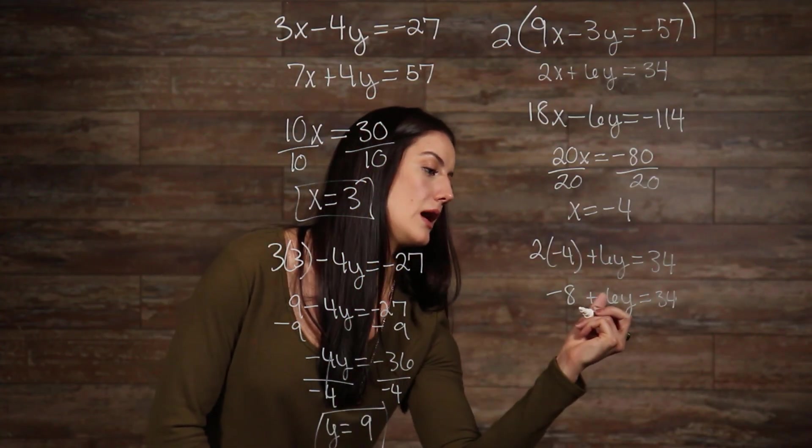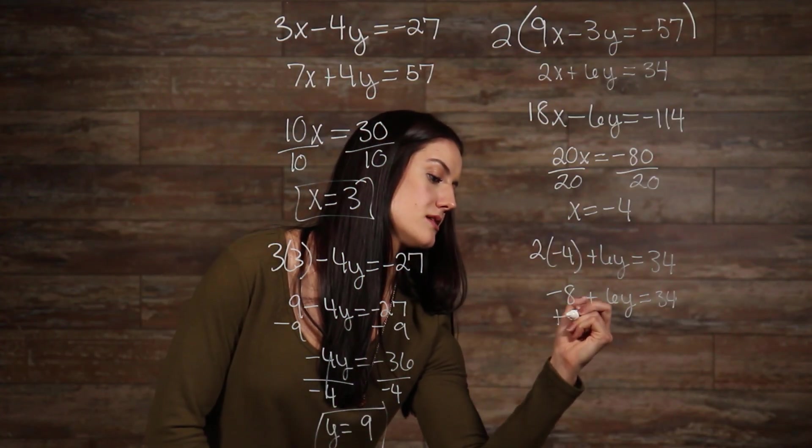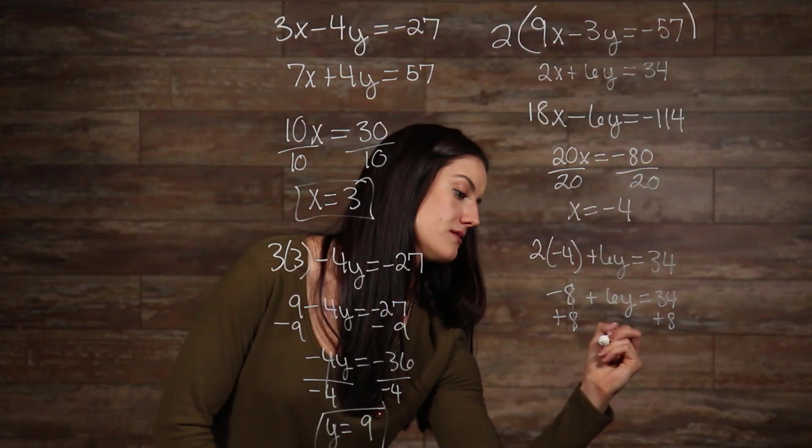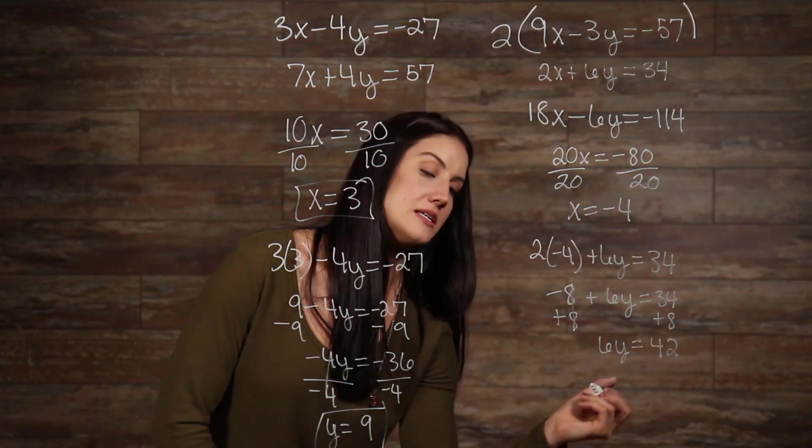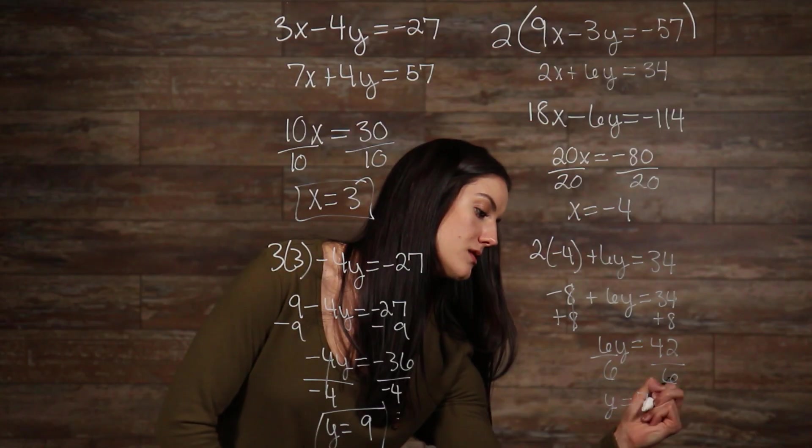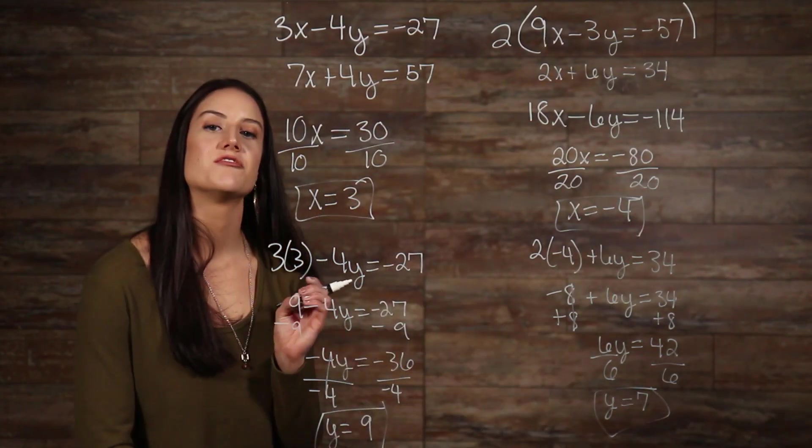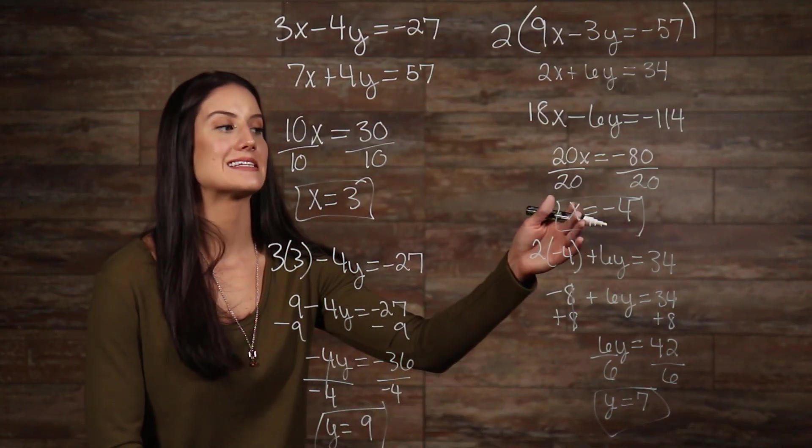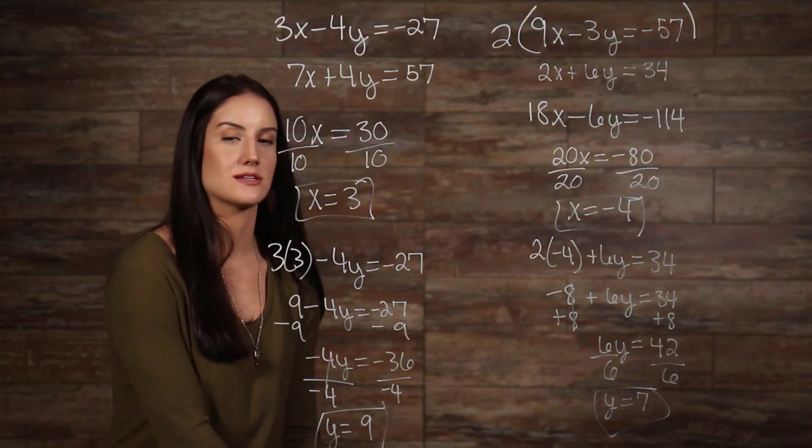Now, I'll move and add my 8 to both sides. Now, I divide both sides by 6 here. So, our final answer for this problem is x is equal to negative 4 and y is equal to 7.